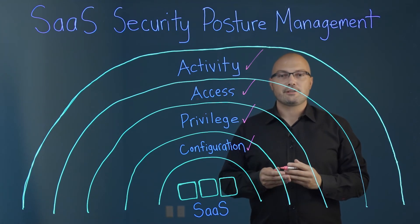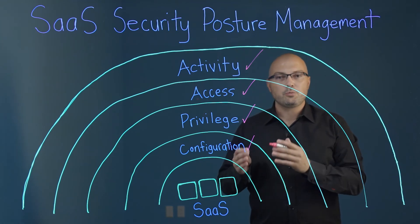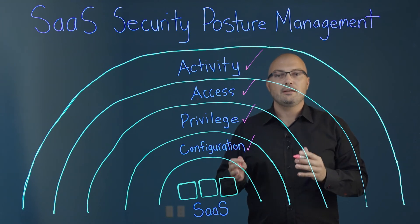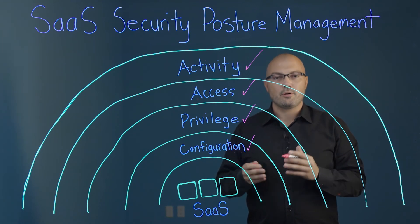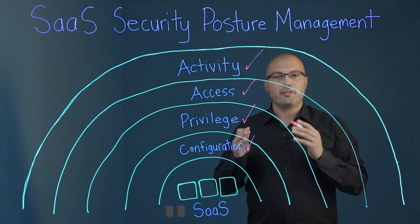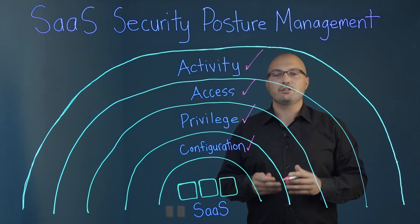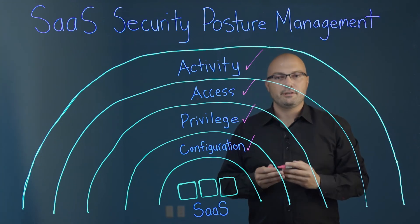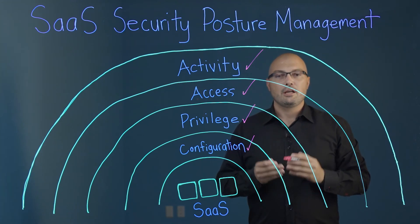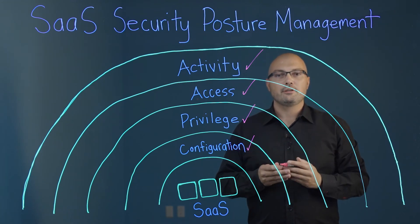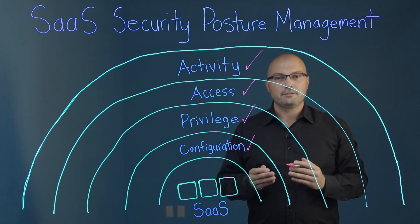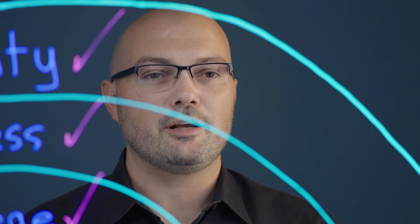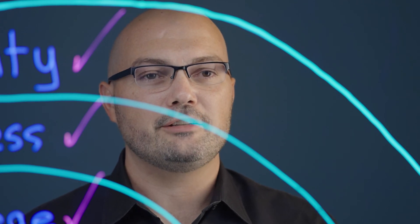When you think about your SaaS apps, each one is different, but you need a common approach. You need to think about configuration, privilege, access, and activity — and you need to do this now. If you'd like to learn more, please visit obsidiansecurity.com.